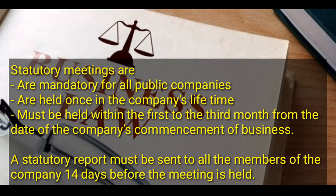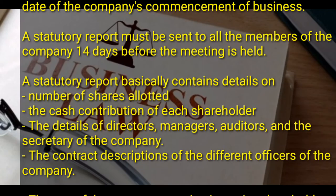The statutory meeting must be held within the first to the third month from the date of commencement of business. A statutory report must be sent to all members of the company 14 days before the meeting is held. The statutory report contains details on the number of shares allotted to shareholders, the cash contribution of each shareholder, the details of directors, managers, auditors and the secretary of the company, and the contract descriptions of the different officers of the company.